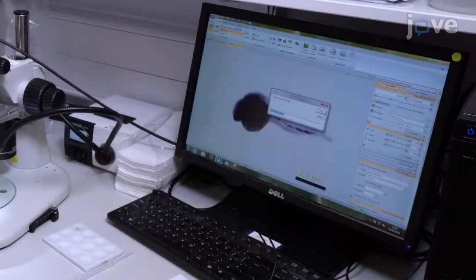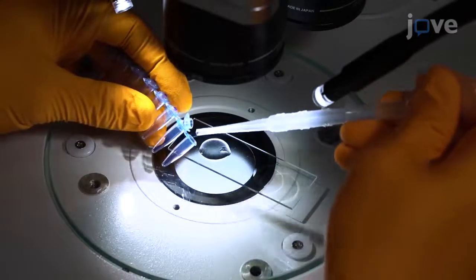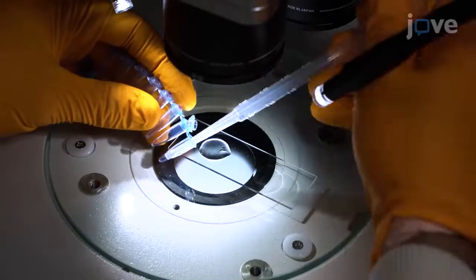Image as many embryos as required and label each image with a unique number. After imaging, transfer each embryo to a PCR tube labeled with the same number.